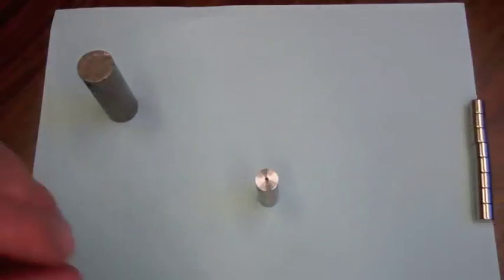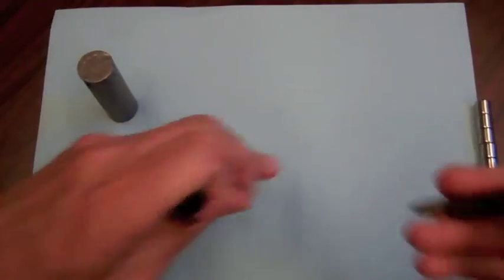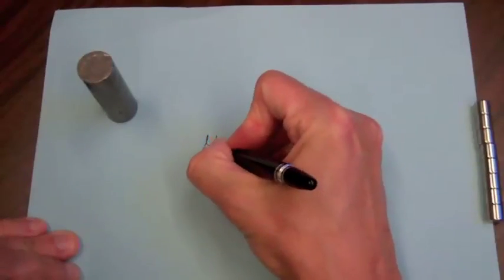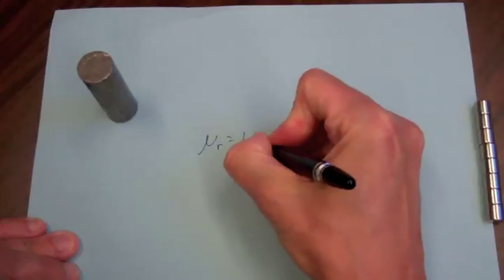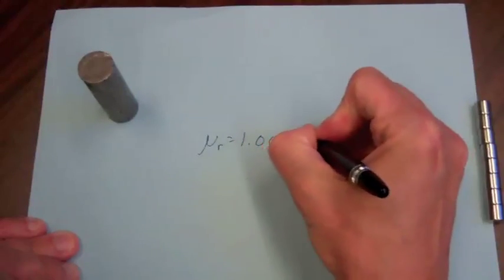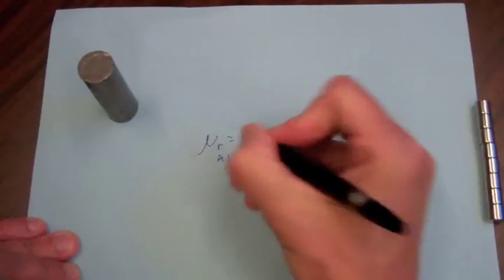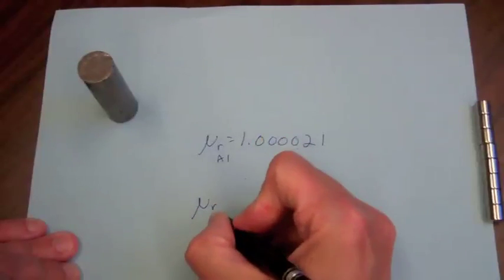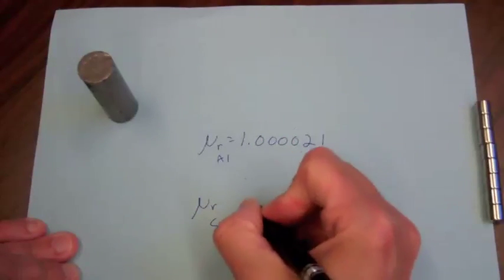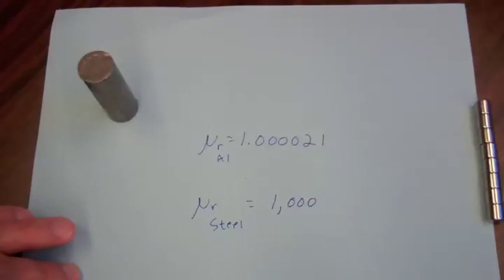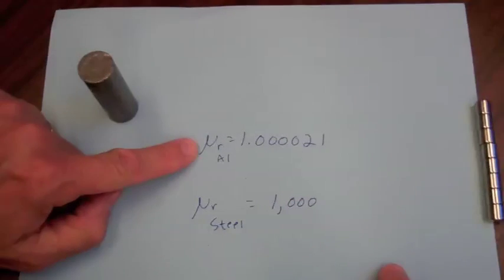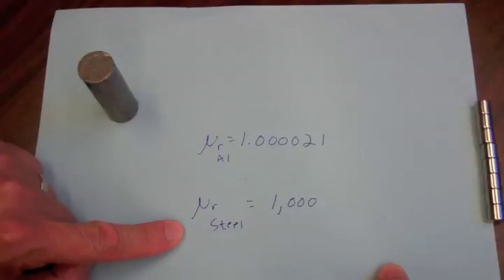In fact the relative permeability for aluminum is 1.000021 whereas the relative permeability for materials such as steel are on the order of a thousand or even greater. So you can see that it is a very weak effect in aluminum compared to steel.